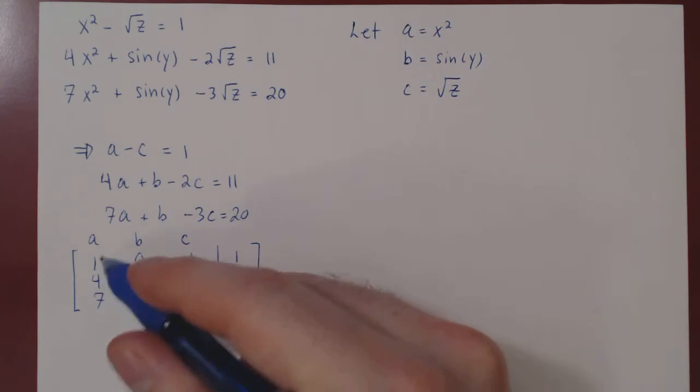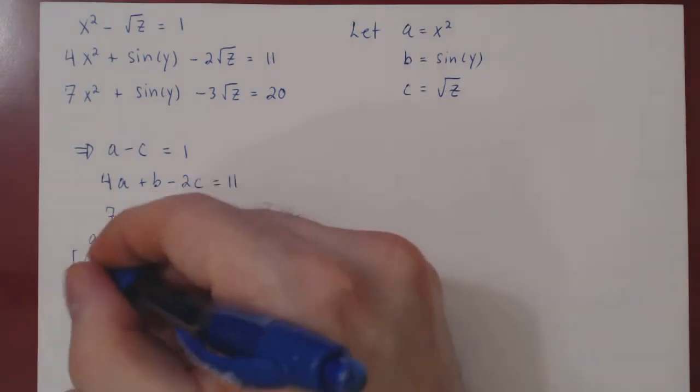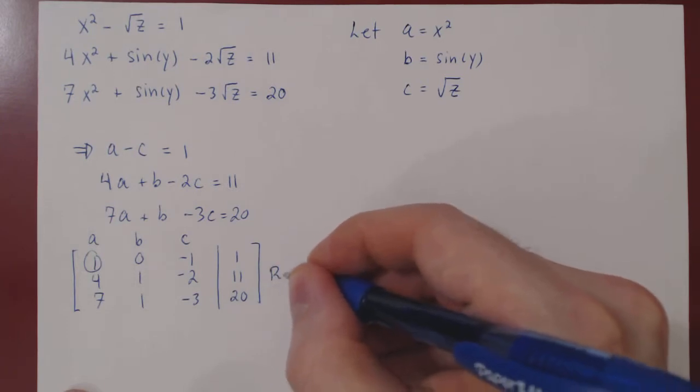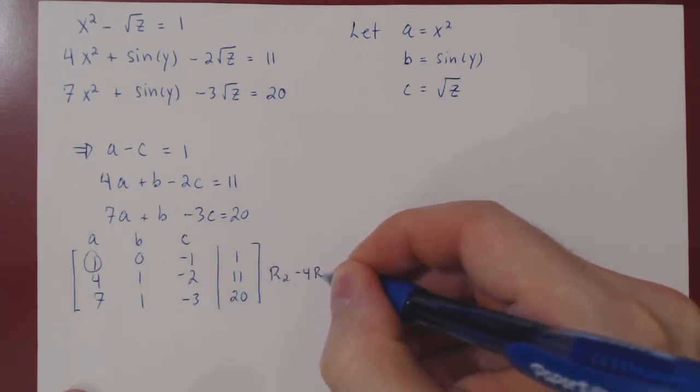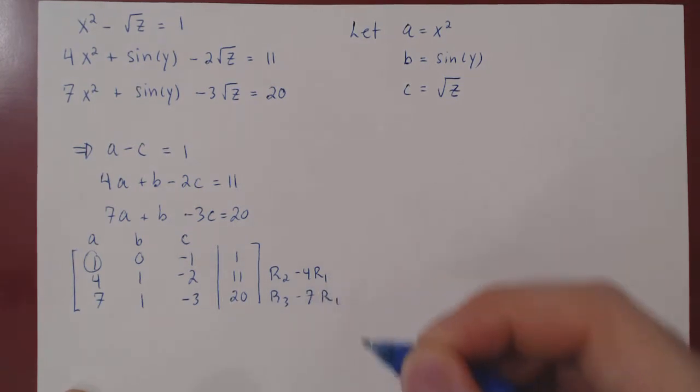We already have leading 1 in the leftmost column and top row, so we can use it to kill the entries below. Row 2 minus 4 of row 1. Row 3 minus 7 of row 1.